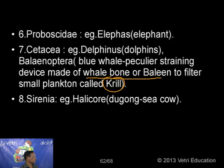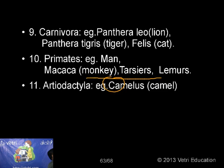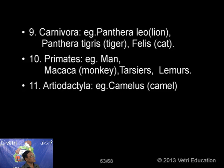The blue whale, though the largest animal, feeds mainly on planktons called krill. At a time it takes large amounts of water along with planktons and filters them using a peculiar structure called whalebone or baleen — hence this blue whale is called a baleen whale. Order Sirenia: Halicore — the dugong, otherwise called the sea cow. Order Carnivora: Panthera leo the lion, Panthera tigris the tiger, Felis domesticus the cat. Order Primates — which we belong to — includes man, Macaca the monkey, Tarsius, and Lemur. And order Artiodactyla — Camelus domesticus the camel.